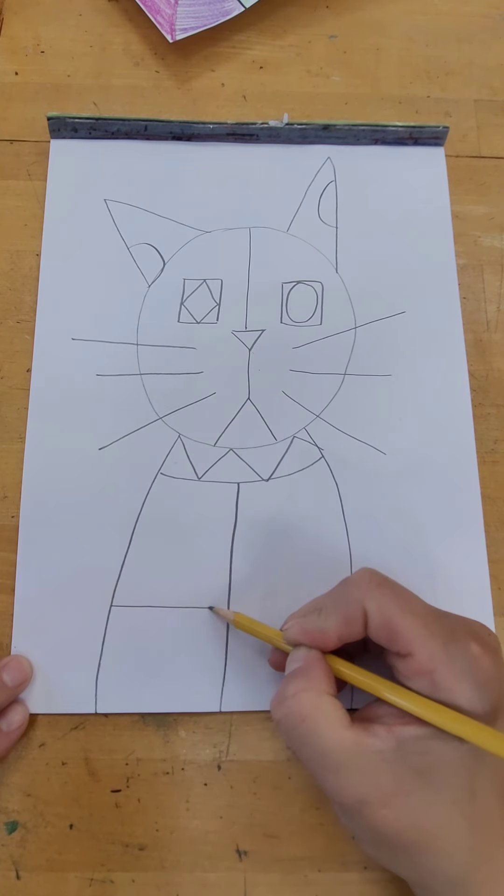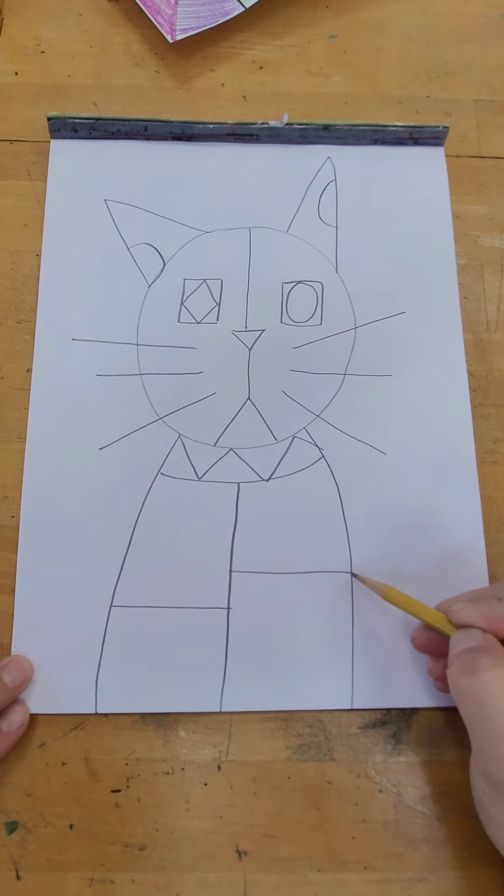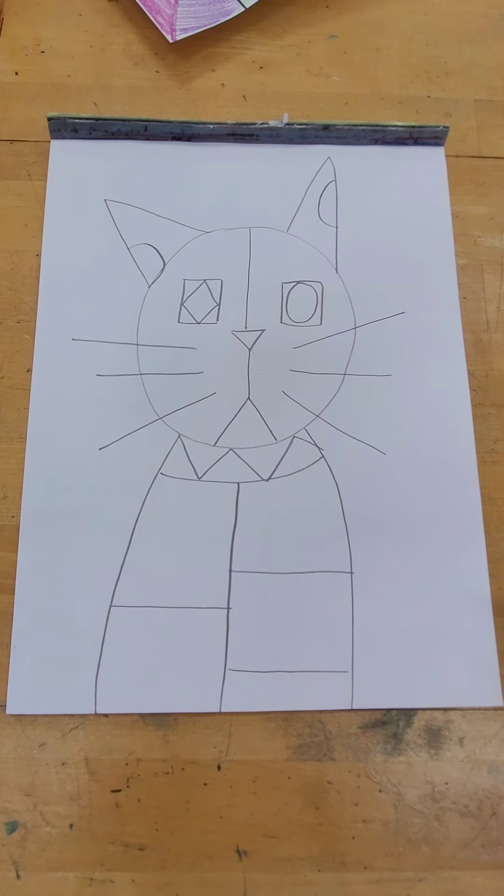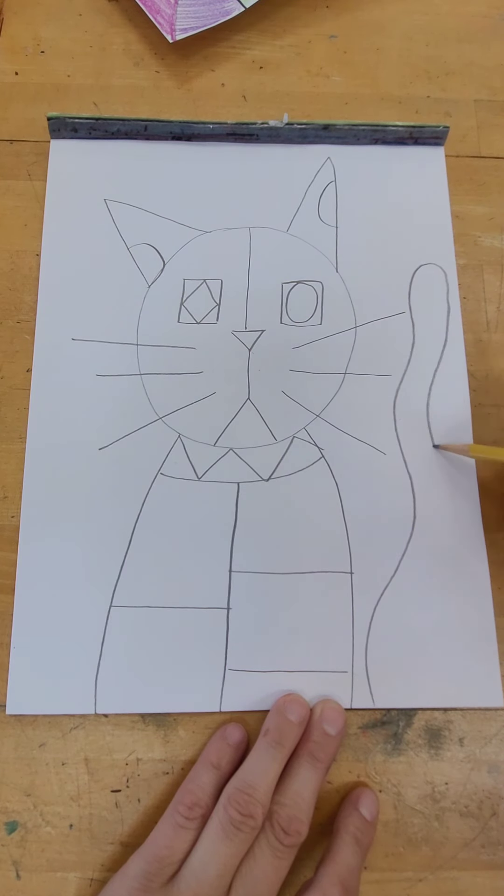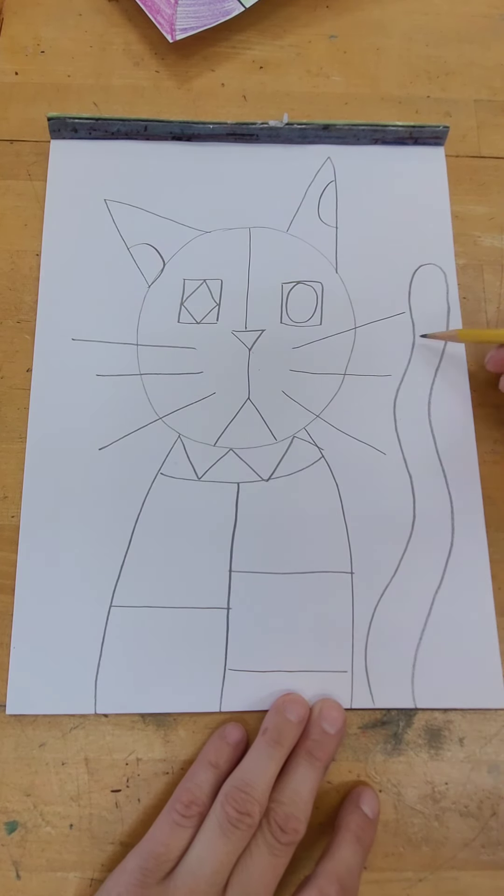Now if you want to add a tail for your cat, you can go ahead and do that. I'm just going to have a tail kind of go up, and I'm just going to break it apart with some lines. So there's my cat.